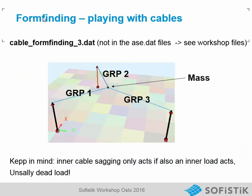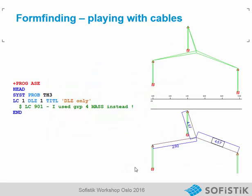Now, coming to the form finding. In form finding we must really play with the cables. Here is a very simple example that you can also access in the additional AVI file examples. We have three masts and three cables — group one, two, three. In the center, we have defined a mass that will produce a loading at the inner node. Keep in mind that inner cable sagging acts only if we have an inner load on the cable element, usually dead load. In a first analysis, we just activate the dead load and make a TH3 analysis. We see the deformation going down a little bit, and the cables get a normal force and an inner cable sagging.